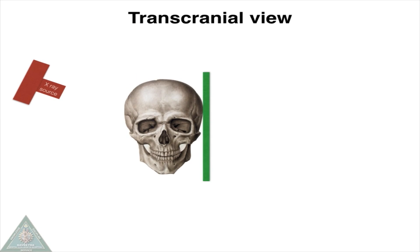Transcranial view: the image receptor is placed touching the side of the patient's face. The X-ray beam passes through the cranium at an angle of 25 degrees to the horizontal, centered through the cranium to the TMJ of interest. The resultant radiograph looks like this.